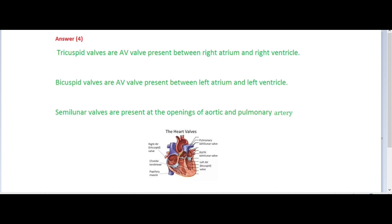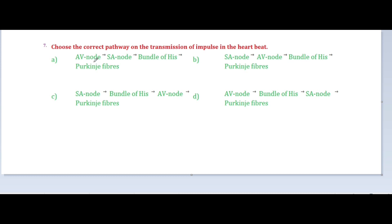Next question: identify the correct pathway for the transmission of impulse in the heartbeat. Options: AV node → SA node → Bundle of His → Purkinje fibers; SA node → AV node → Bundle of His → Purkinje fibers; SA node → Bundle of His → AV node → Purkinje fibers; AV node → Bundle of His → SA node → Purkinje fibers. We know that the nodal tissue in the heart is myogenic.